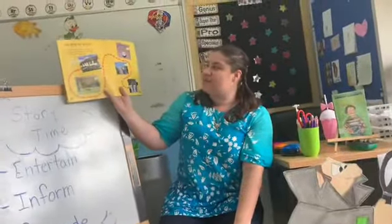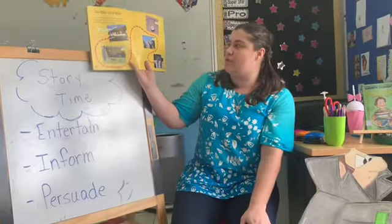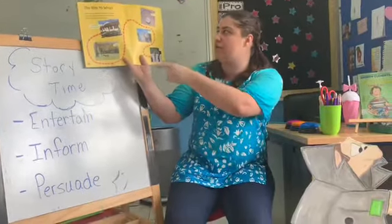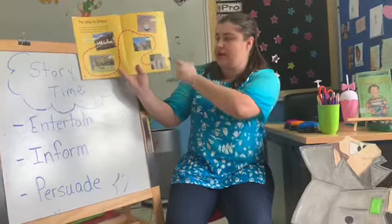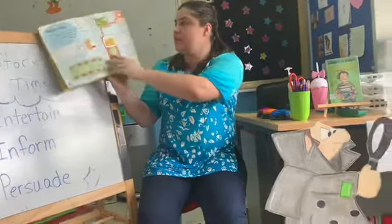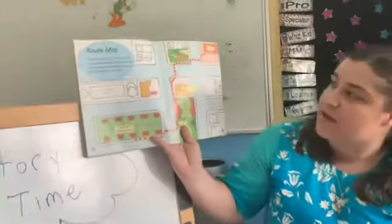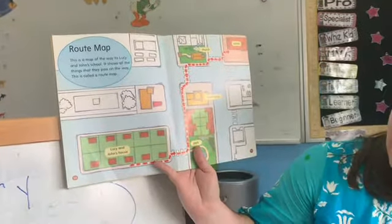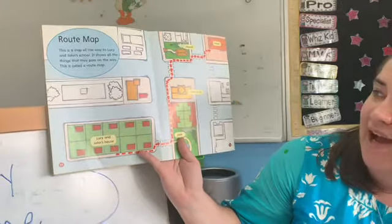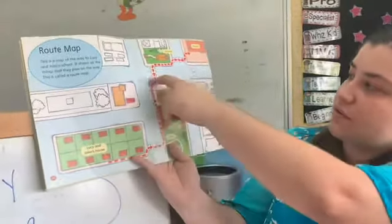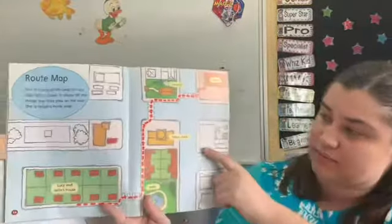Each day Lucy and John walk to school and walk home. These are some of the things they pass on the way: their house, the park, the town clock, a church, and then they get to school. 'Route' means the way that you go somewhere. This is a map of the way to Lucy and John's school — it shows all the things they pass. This is called a route map. I passed the soccer field to get from my house to the school!